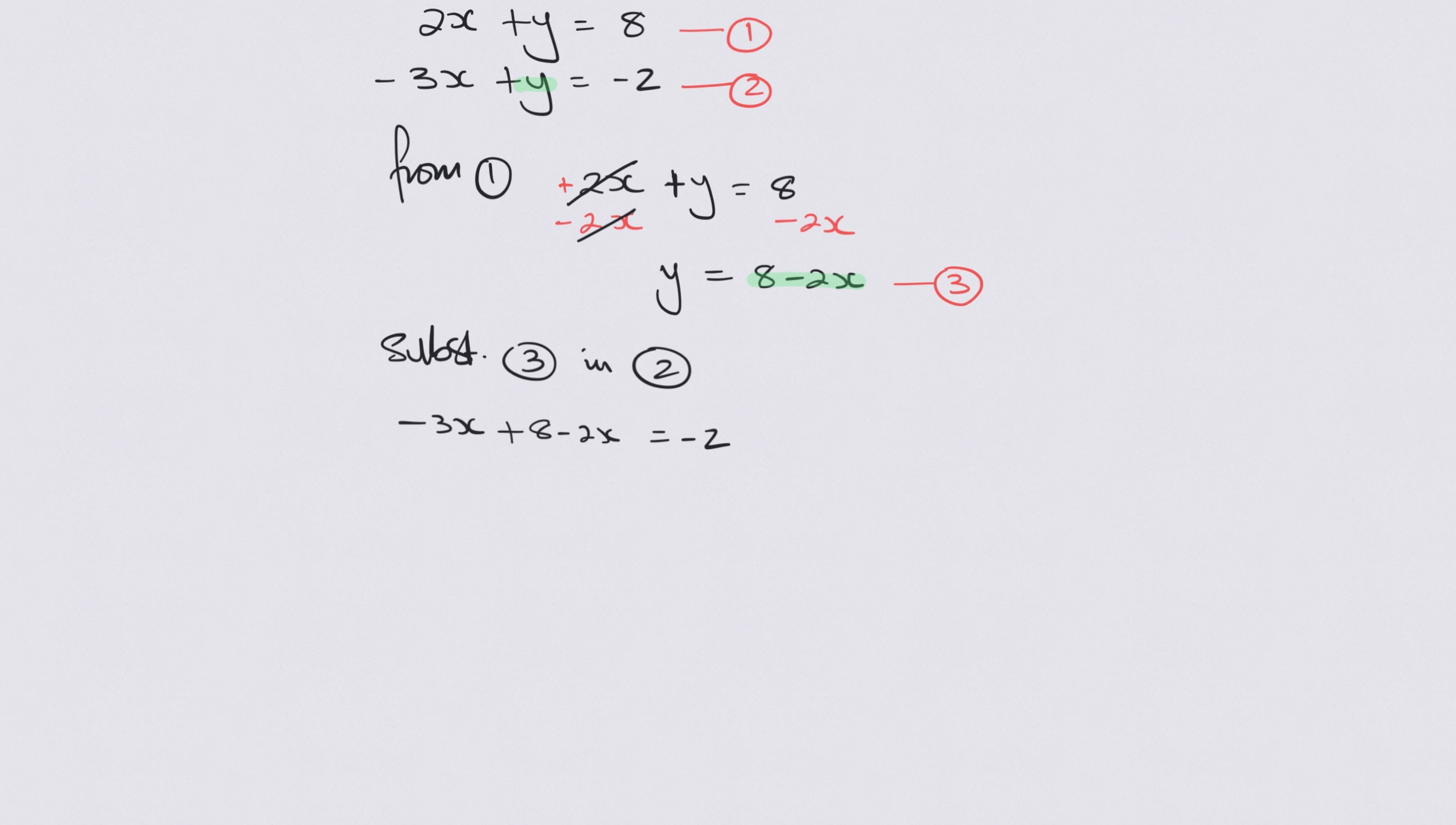Okay, so now we start solving this and we have now got minus 3x take away 2x. That's going to give us minus 5x. What we can do while we're at it,